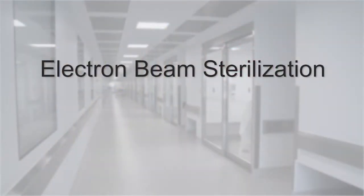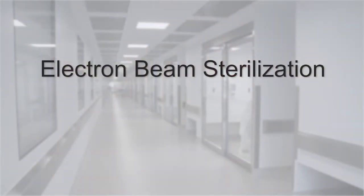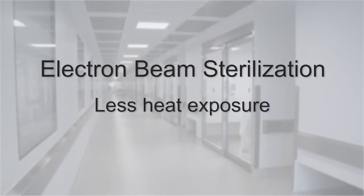There are several advantages. First of all, electron beam sterilization can occur within a matter of seconds versus gamma radiation, which usually takes about 5 to 6 hours. During that time, heat can be generated within the tissue as well as free radicals. Both of those elements can damage the collagen structure. So by minimizing the time with electron beam sterilization, you minimize the potential exposure of the tissue to those harmful elements.